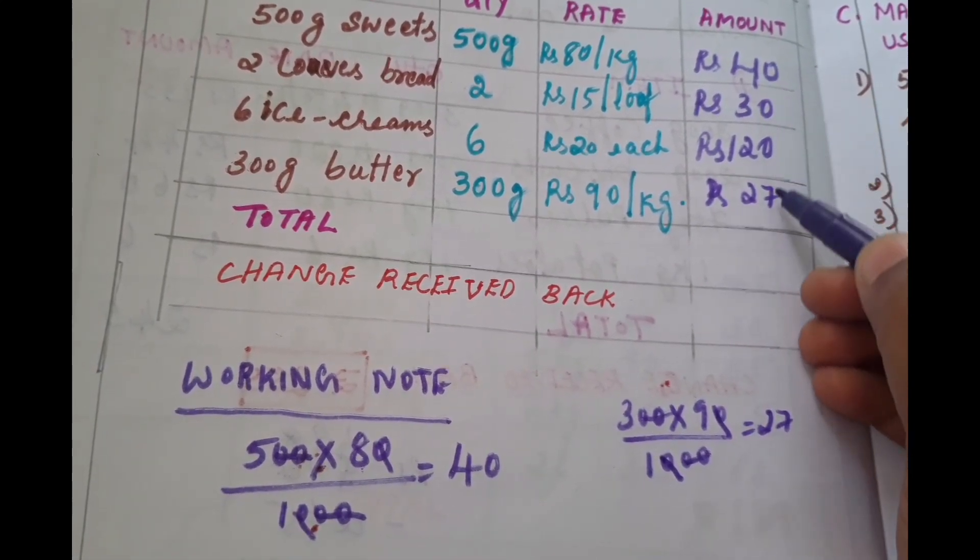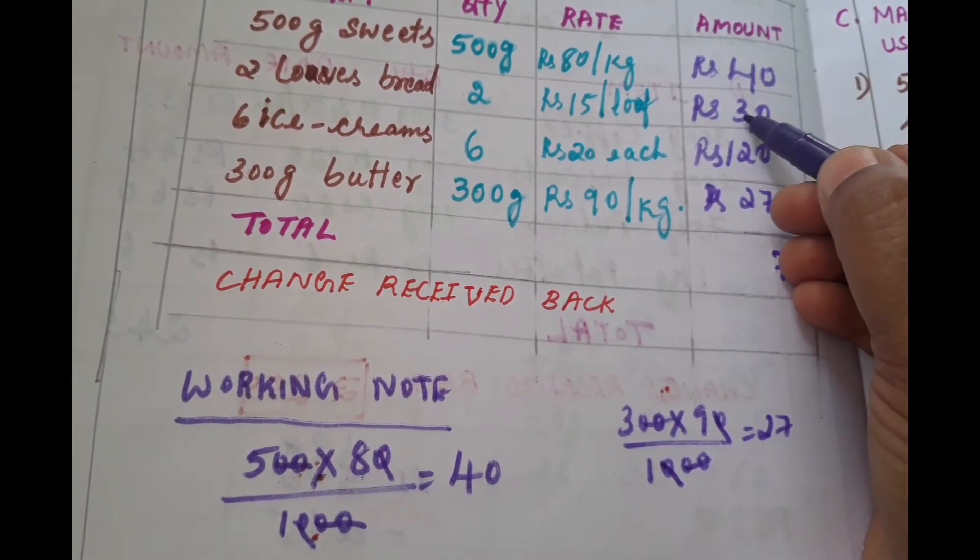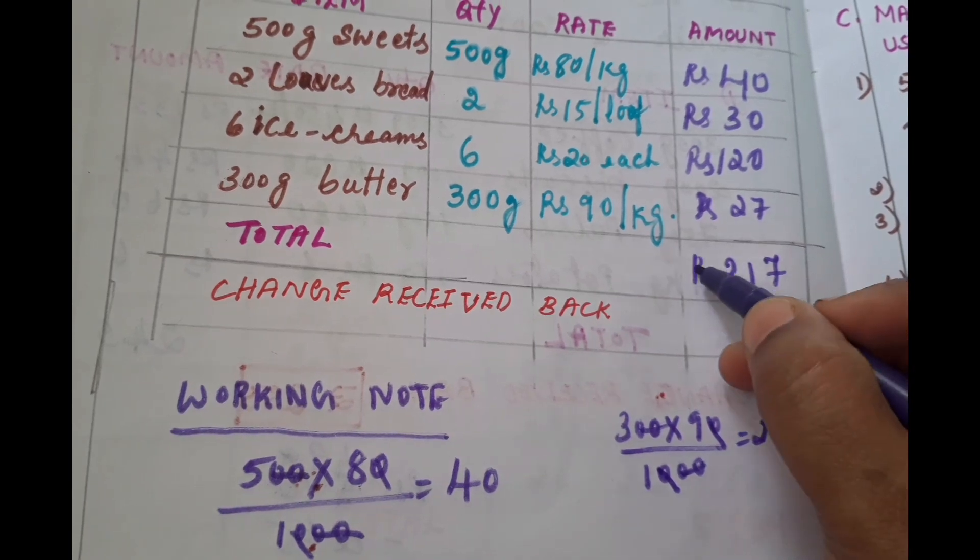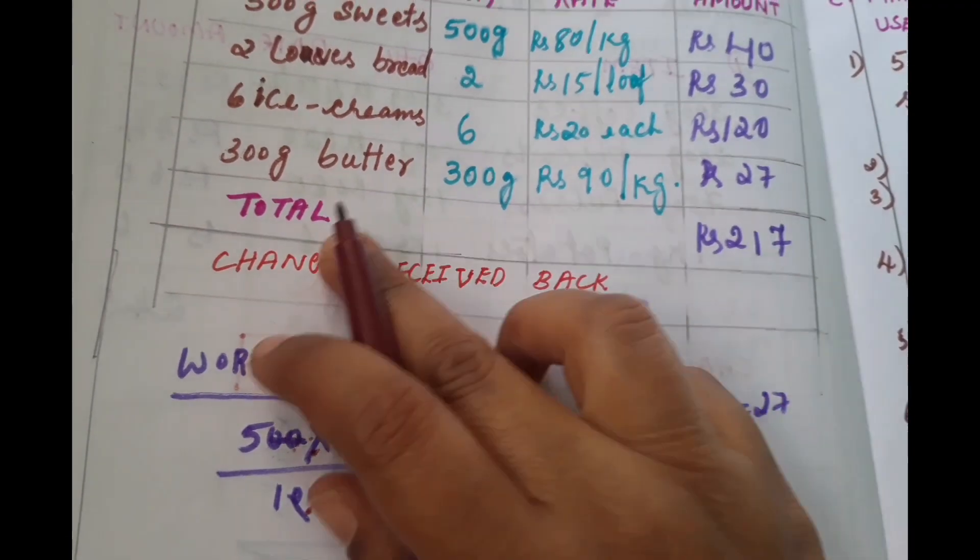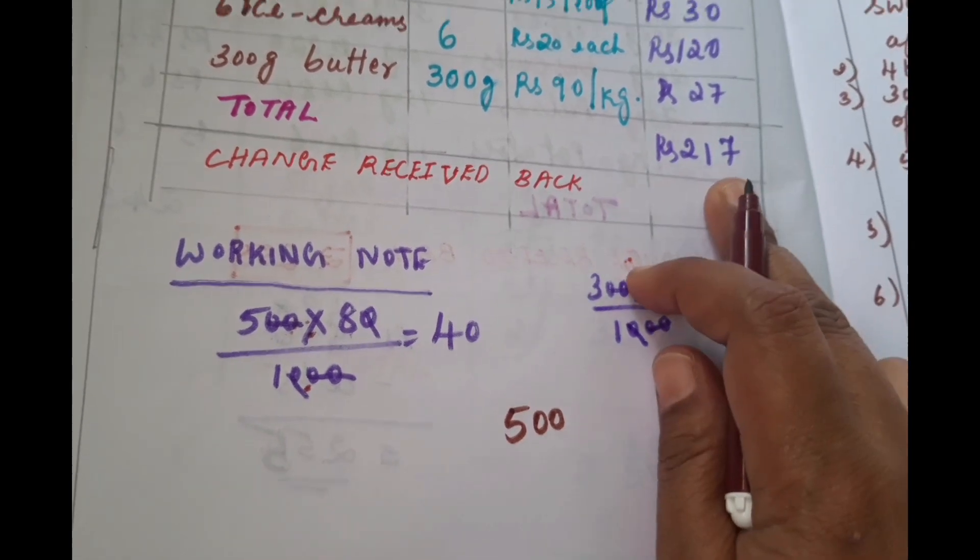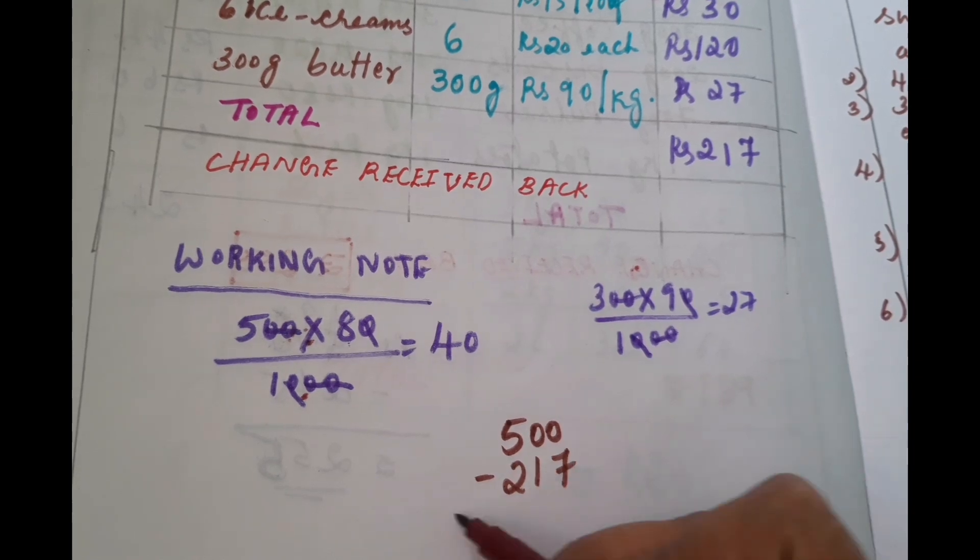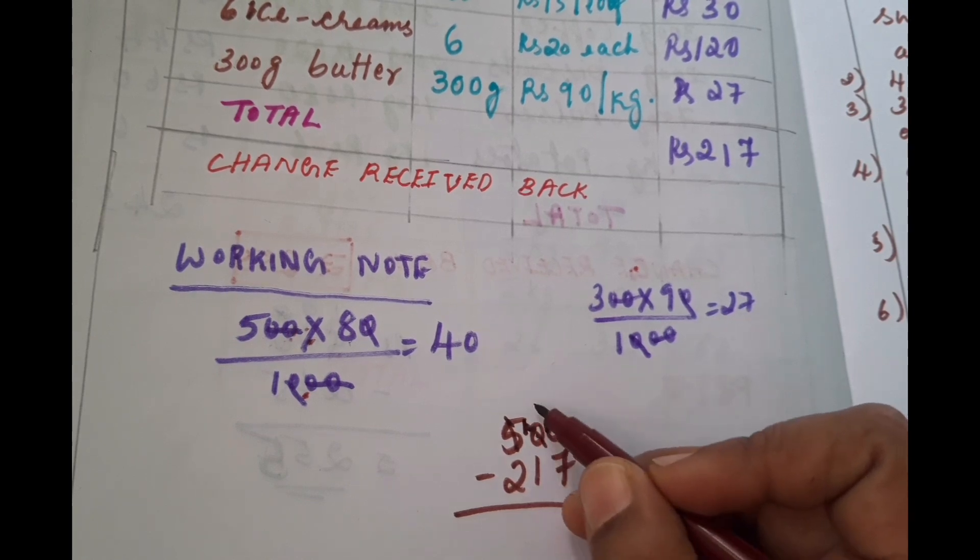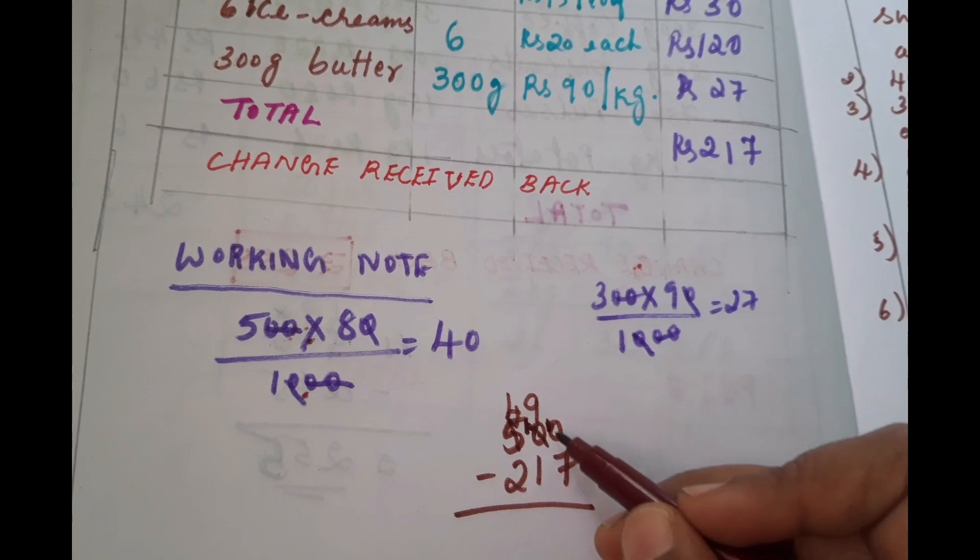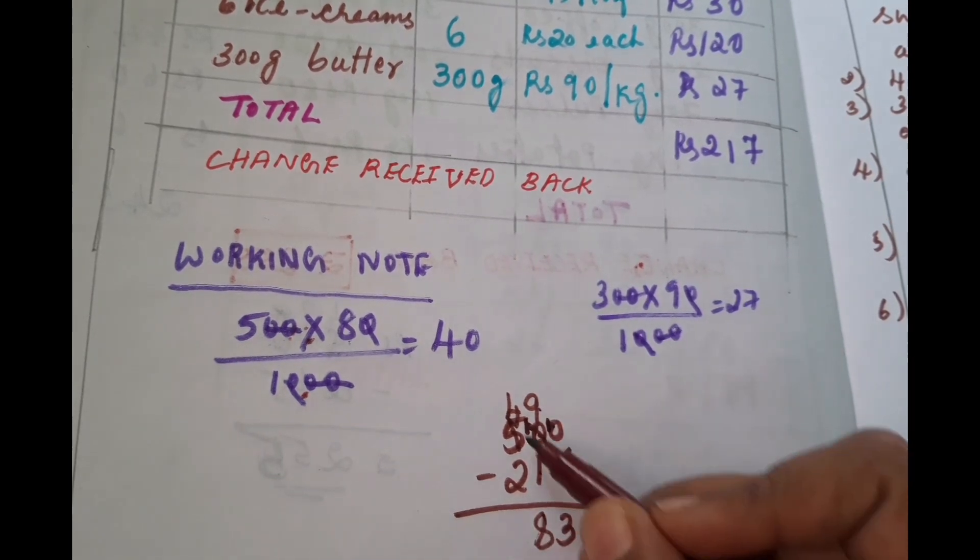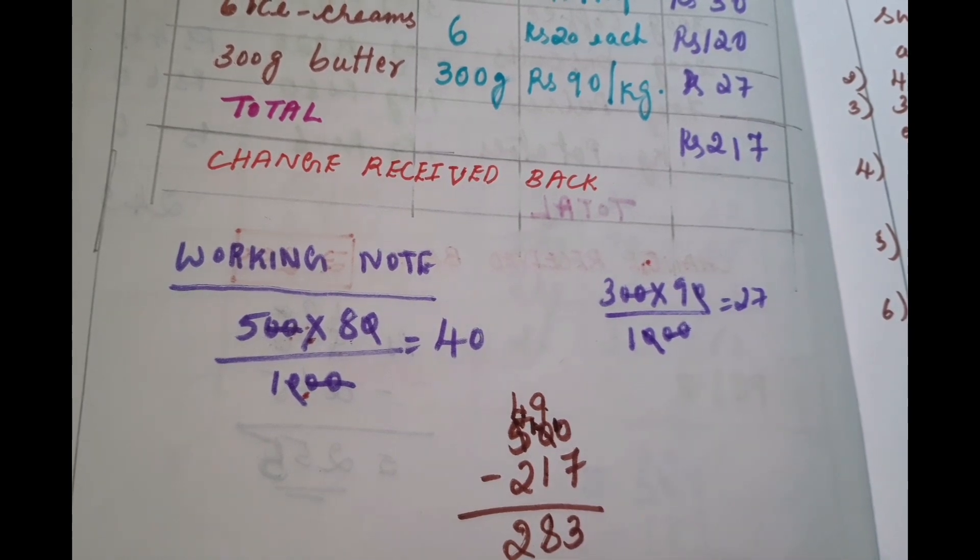Now we have to find the total: 40 plus 30 plus 120 plus 27 equals 217. Now we find the change. Shopkeeper is given 500 rupees, total is 217, so 500 minus 217. Ten minus 7 is 3, nine minus 1 is 8, four minus 2 is 2. Change is 283 rupees.